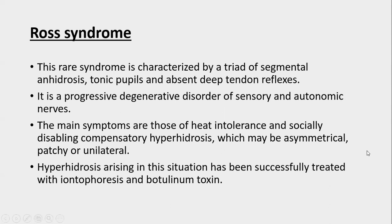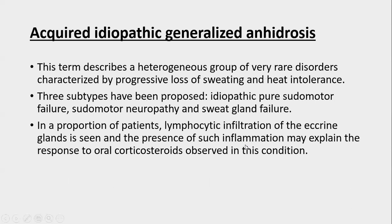Ross syndrome is a rare syndrome characterized by a triad of segmental anhidrosis, tonic pupils, and absent deep tendon reflexes. It is a progressive degenerative disorder of sensory and autonomic nerves. Main symptoms are heat intolerance due to anhidrosis and socially disabling compensatory hyperhidrosis that is asymmetrical, patchy, or unilateral. The hyperhidrosis in this situation is successfully treated by iontophoresis and botulinum toxin.